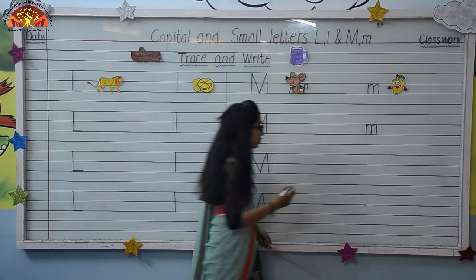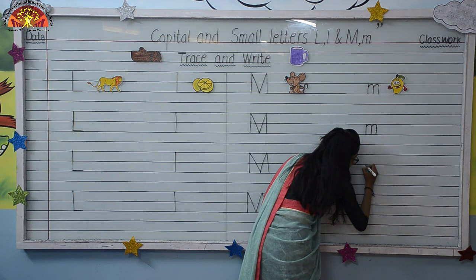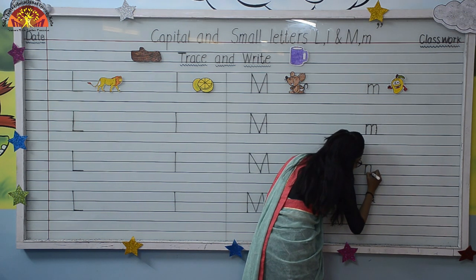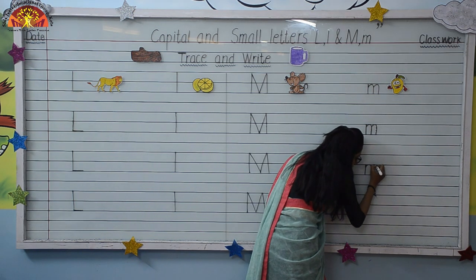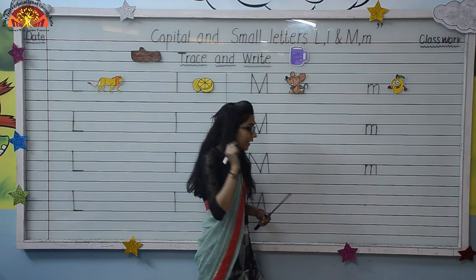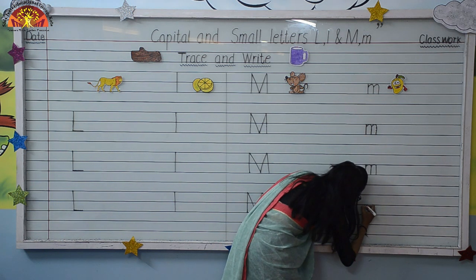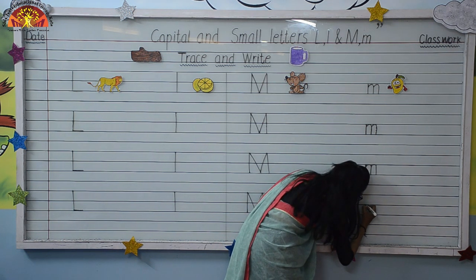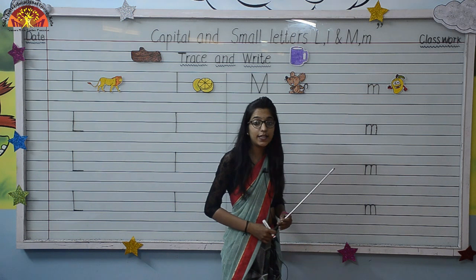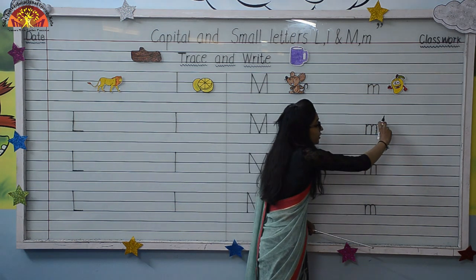Now let's write small M on dot. Draw a small standing line, up with the same line, curve, down, and make a standing line. Up with the same line, curve, down, make a standing line. Let's write one last time: standing line, moving up with the same line, curve, down, standing line, moving up with the same line, again curve, and small standing line. You have to draw this letter in between these two lines only.